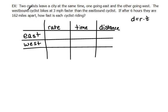The westbound cyclist bikes at 3 miles per hour faster than the eastbound cyclist. We don't know how fast the eastbound cyclist is going, so let's say x miles per hour. The westbound cyclist is going 3 miles per hour more than that, which would be x plus 3.